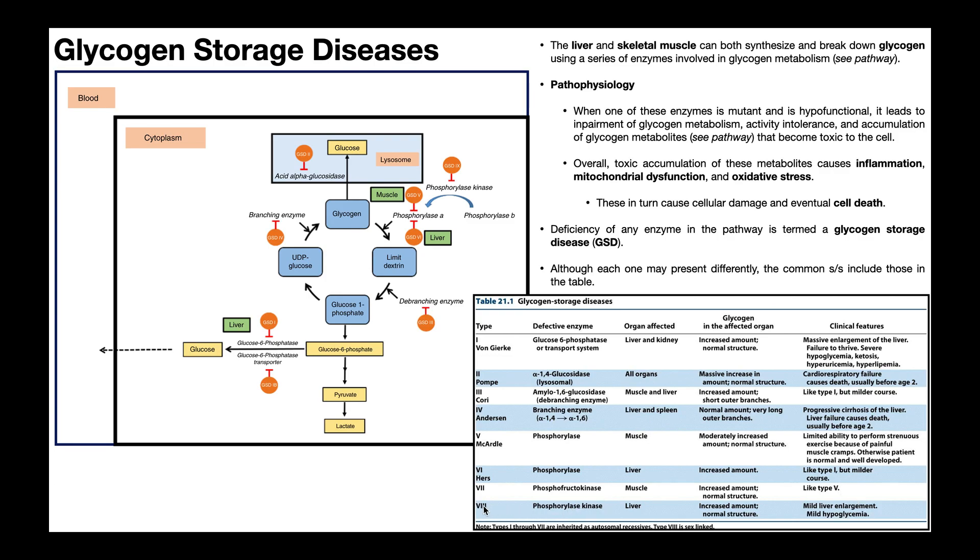Then we have type 8 glycogen storage disease. This is going to be a deficiency of phosphorylase kinase, and this is specifically going to affect the phosphorylase kinase in the liver. This will manifest as mild liver enlargement, mild hypoglycemia, but again this is nowhere near as dangerous as types 1, 2, and 4 that we talked about earlier.